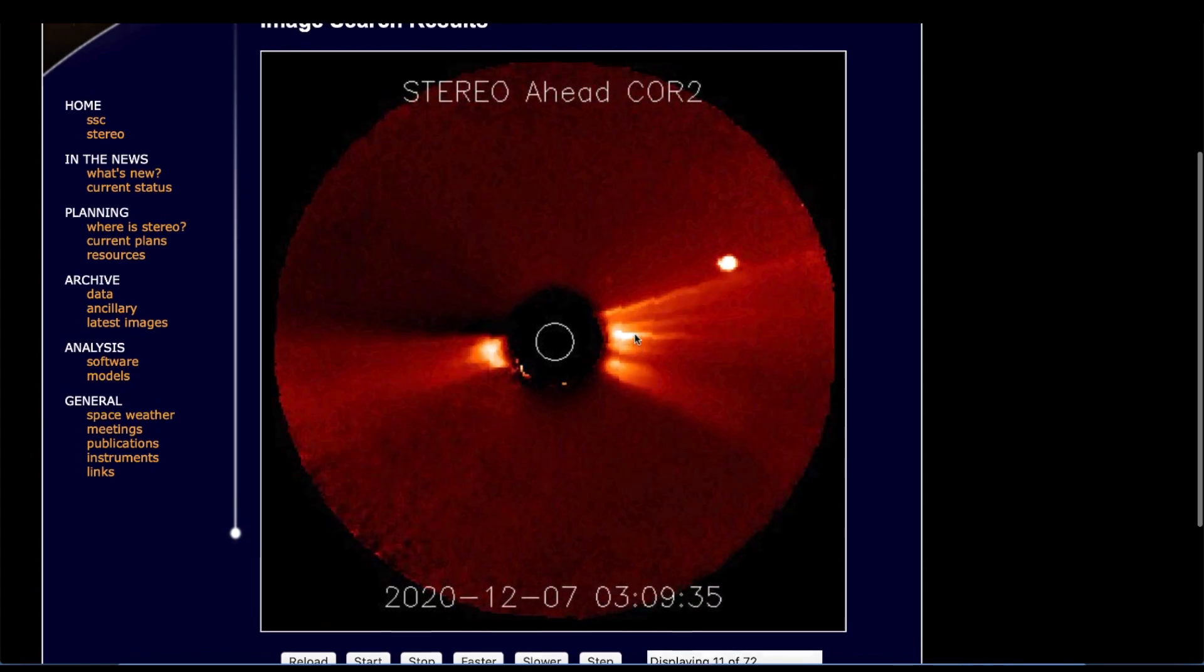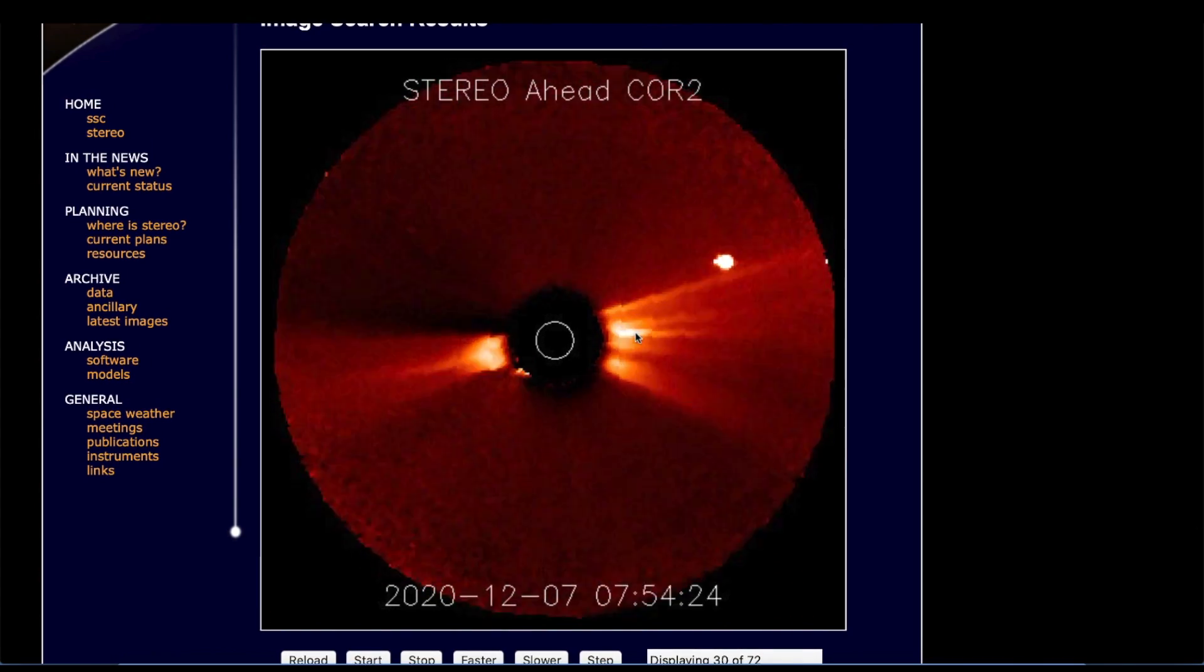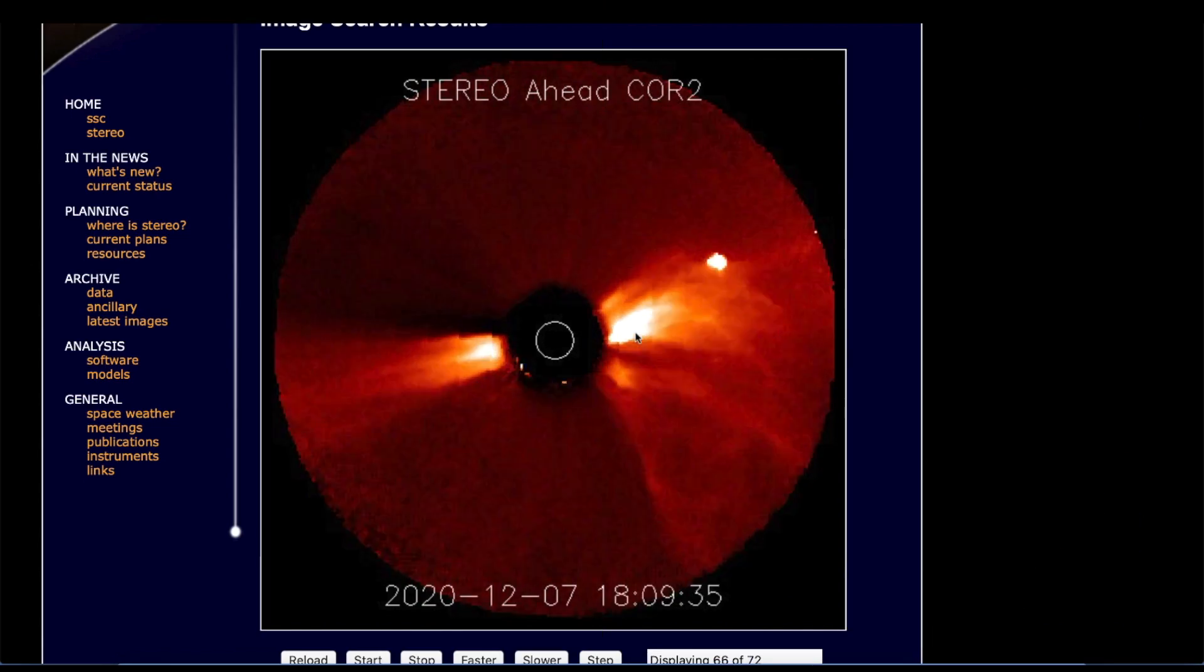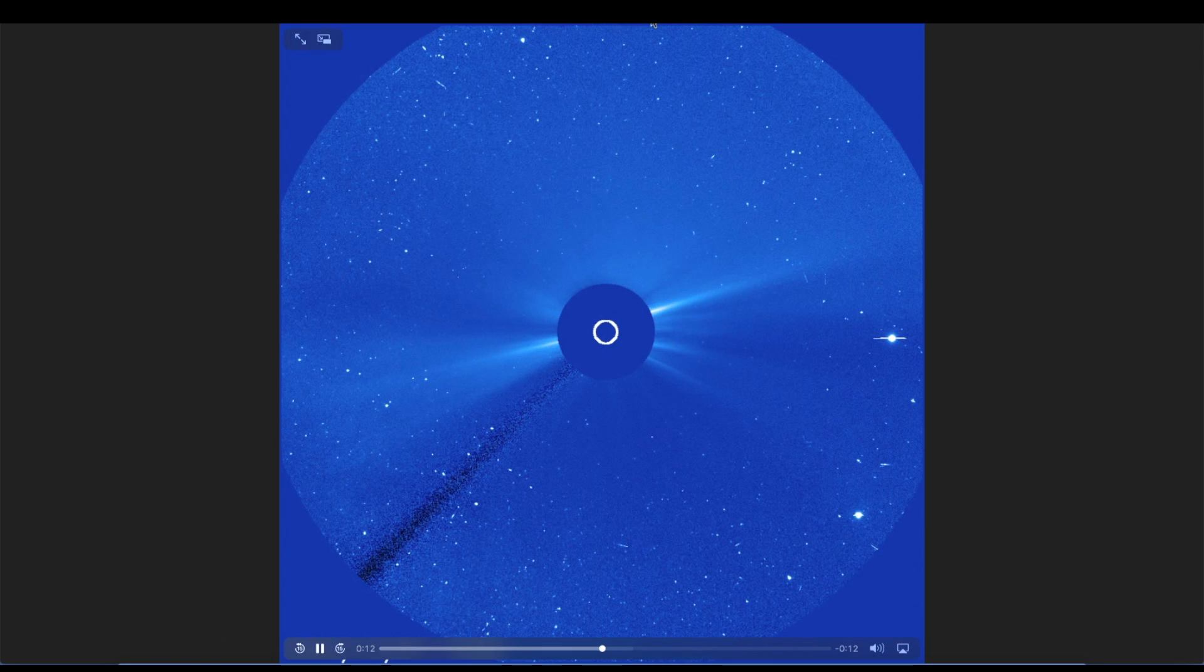In the direct path of that very strong, long duration C-class flare. Right there it is. That's Mercury, in case you're wondering what that bright spot is up there.